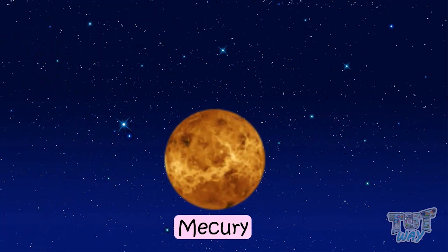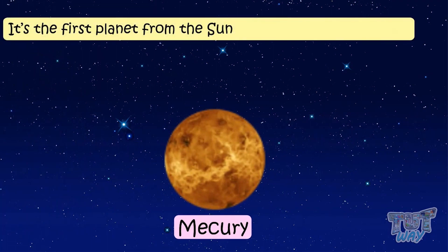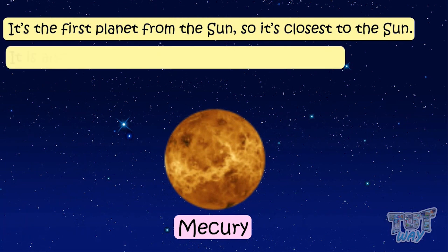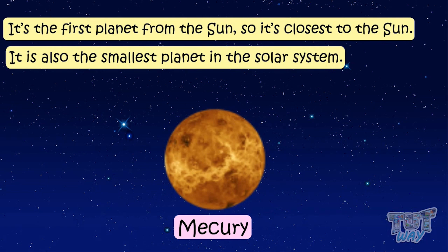Mercury. It's the first planet from the sun, so it's closest to the sun. It is also the smallest planet in the solar system.